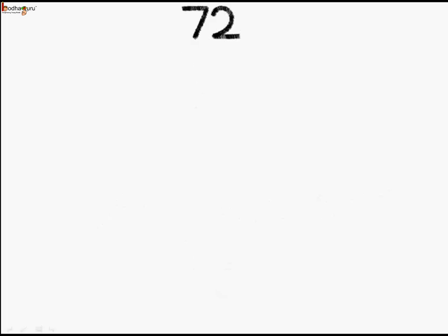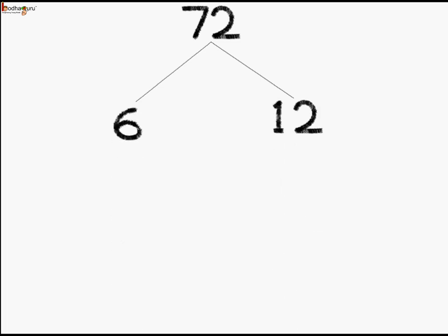Now, let us do the same for 72. That is, we will do the prime factorization of 72 using the factor tree. We know 12 sixes are 72, so we will make two branches and write down 6 and 12.